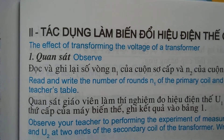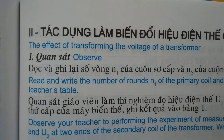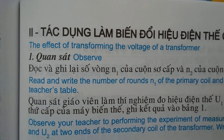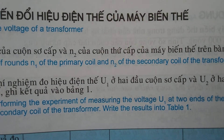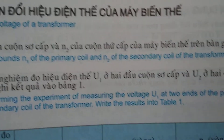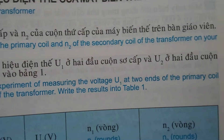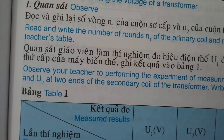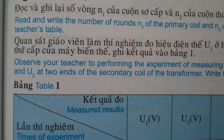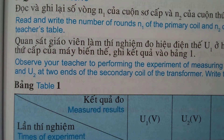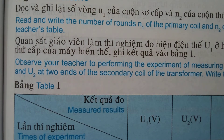The effect of transforming the voltage of a transformer. Read and write the number of rounds N1 of the primary coil and N2 of the secondary coil of the transformer. On your teacher's table, observe and write the number of rounds N2 of the secondary coil before performing the experiment.